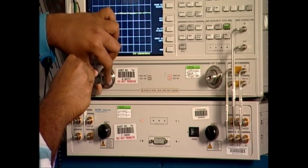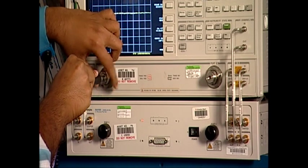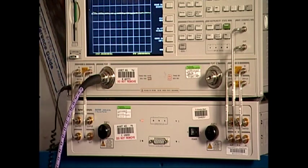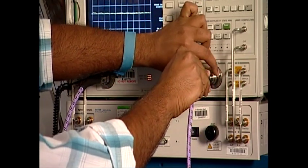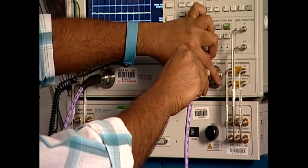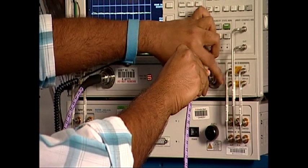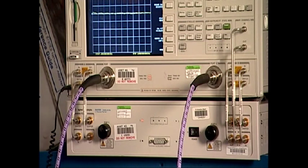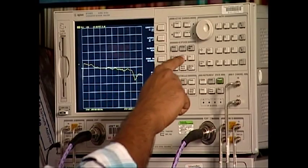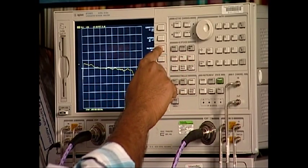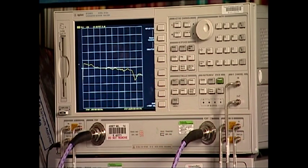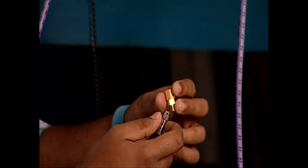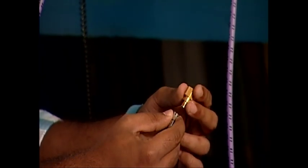For this, we'll have to connect the two cables at ports 1 and port 2. We then select Cal, Calibrate menu, full two-port. For the forward measurement, we use the cable that is connected at port 1. First, we connect the open standard to the cable at port 1.